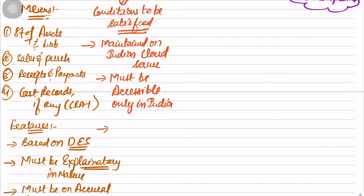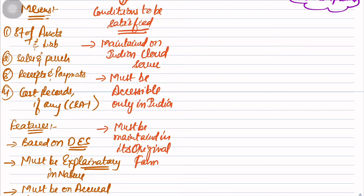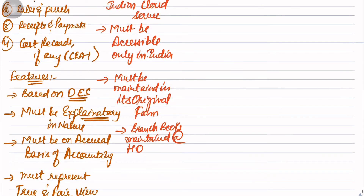Condition number three: must be maintained in its original form. You are not allowed to alter it, you are not allowed to use any kind of special language - maintain it as per Schedule III. Branch books which are maintained at the head office must be maintained in unaltered form - you are not supposed to do any kind of change just because you are the head office.